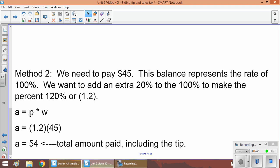So we're going to do a = p × w, a = 1.2 for p × 45 for w. So a = 54, and this represents the amount that you pay including the tip that you want to leave. So this is officially the end of the seven-part series. Thanks for watching. Please bring all your notes and questions to class tomorrow.